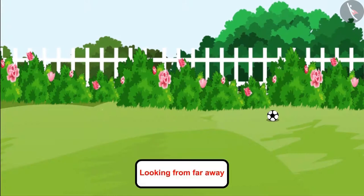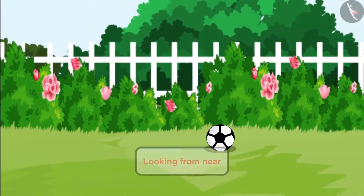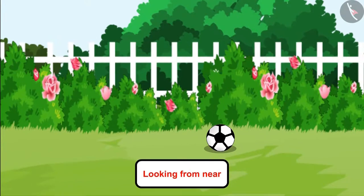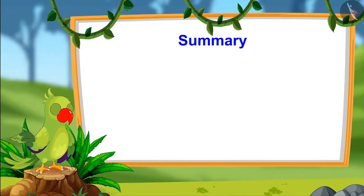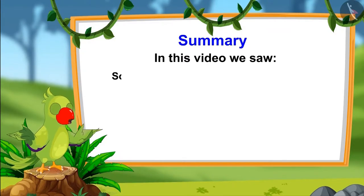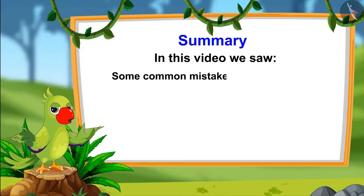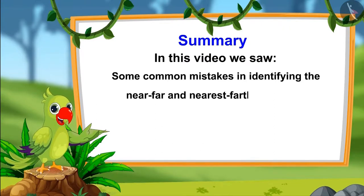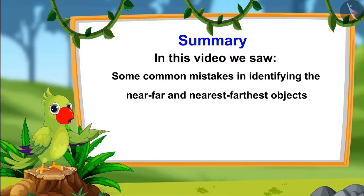Things look small when seen from a distance. When we get closer to the object, we are able to see the real size of the object. That's why they look big when we get near the object. So children, in this video we have learnt about some common mistakes which should not be made while identifying the near, far and nearest, farthest objects.